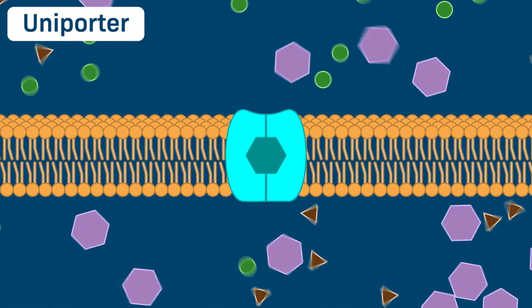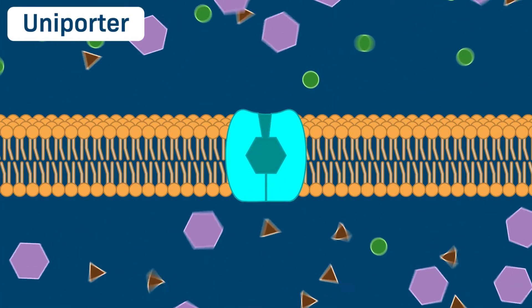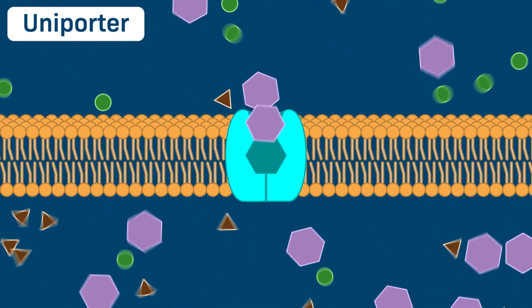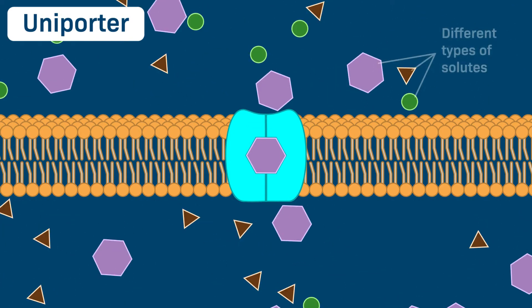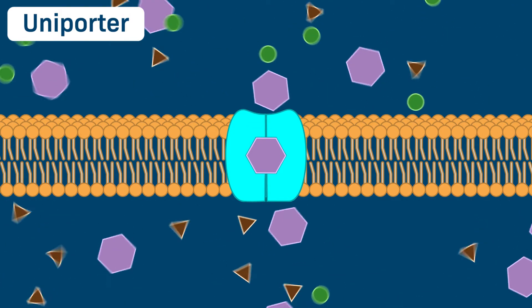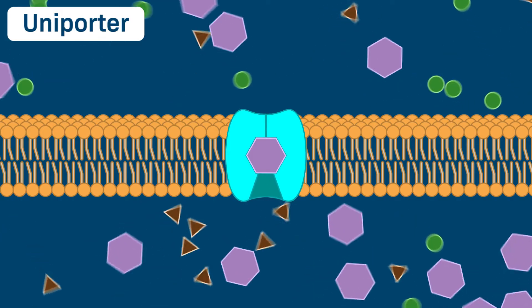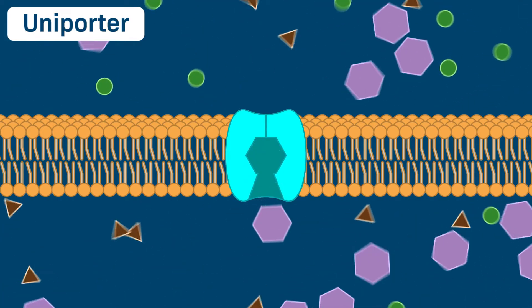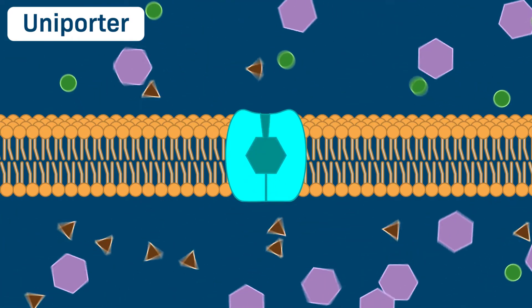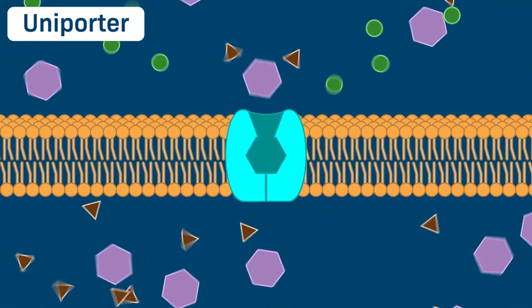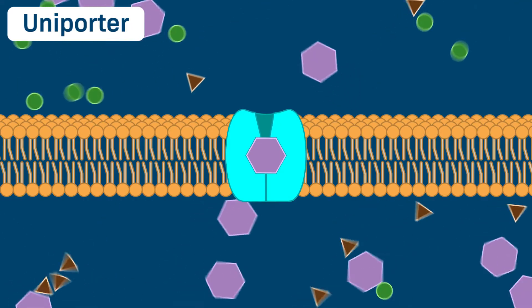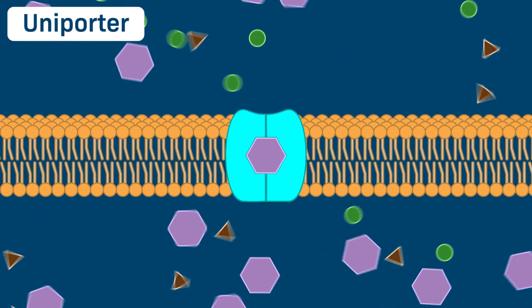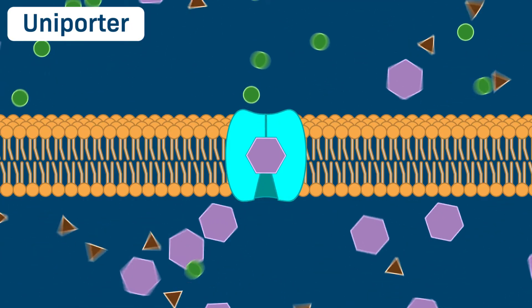In this example, there are three types of solute present, represented by a circle, a triangle, and a hexagon. Notice how a uniporter selectively binds only one type of solute — the hexagon — and shuttles it from one side of the membrane to another.